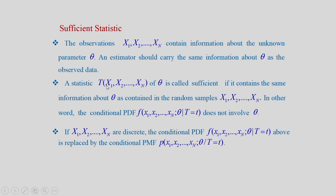A statistic T(X1, X2, ..., Xn) is called sufficient if it contains the same information about theta as contained in the random samples X1, X2, ..., Xn. In other words, the conditional PDF f(X1, X2, ..., Xn; theta | T = t) does not involve theta. If this conditional PDF does not involve theta, we say the statistic T is sufficient.